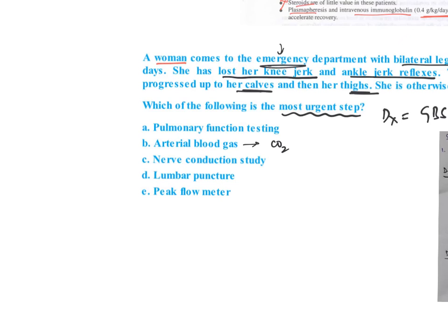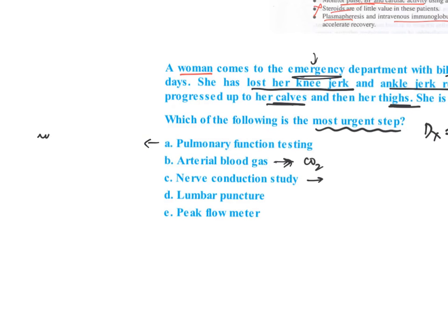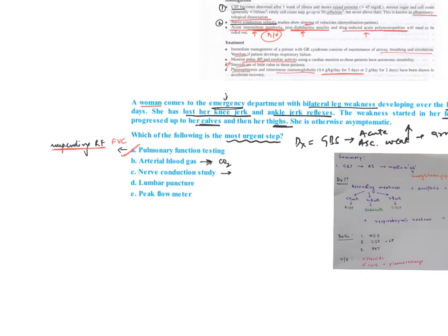The most urgent step - PFT, ABG, NCS, or lumbar puncture? ABG we can do for CO2 analysis for respiratory function, but it cannot be done urgently. Nerve conduction studies is the most appropriate step for diagnosis, but here our goal is not diagnosis but to treat the patient. The patient can have a major issue of impending respiratory failure. We have to detect that with pulmonary function test. Lumbar puncture is again time-consuming and won't help much in this case. Peak flow meter is of no use. The answer is pulmonary function test to check whether impending respiratory failure is present so we can opt for ventilator.